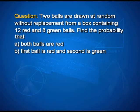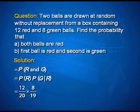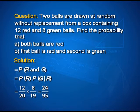For the second situation — first red and second green without replacement — by the multiplication theorem: probability of red is 12 by 20. The probability of green given a red was taken out is 8 by 19, since 8 are favorable for green but the total is now 19. This simplifies to 24 by 95. Because the ball was not put back, the probability of the second ball is affected — either the total or the favorable count has changed.